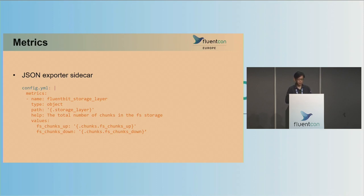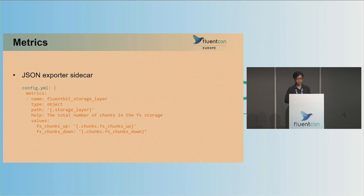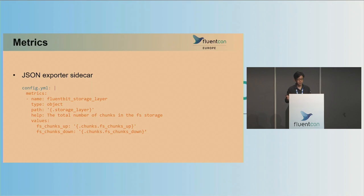This is an example of our config. The name here, FluentBit storage layer, is the metric name prefix, and the value field is the metric you want to export — in this case FS chunks up and FS chunks down. To get the metric value, the exporter follows the JSON path, which is in the curly braces: storage layer, dot chunks, dot FS chunks up or down.